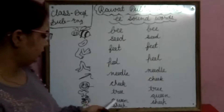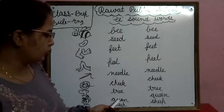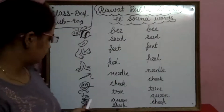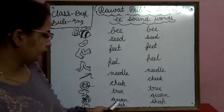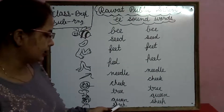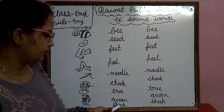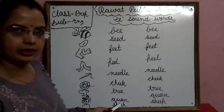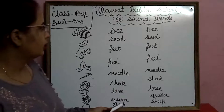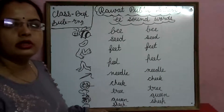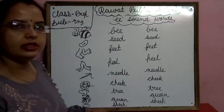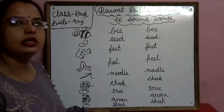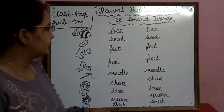Tree: T-R-E-E, tree means ape. Queen means gani. Sheep: S-H-E-E-P, sheep means babe. So these are our double E sound words.